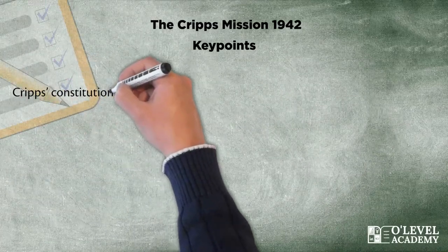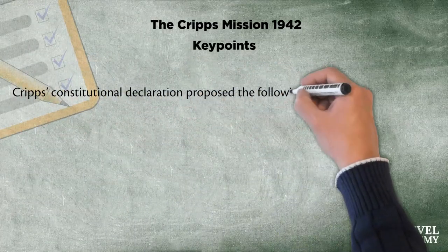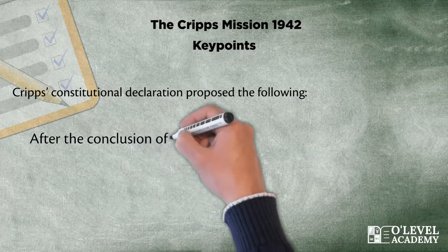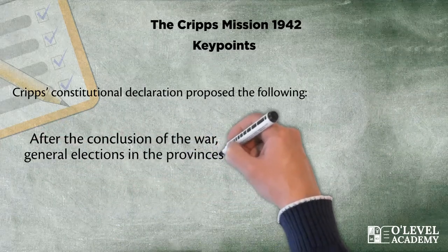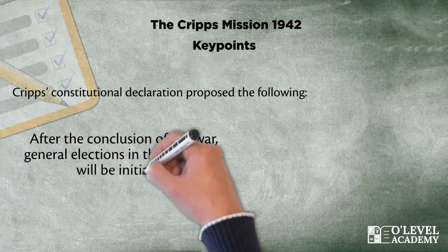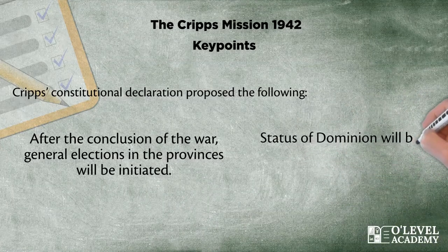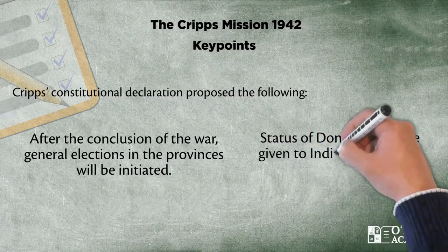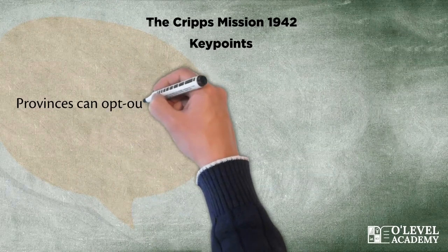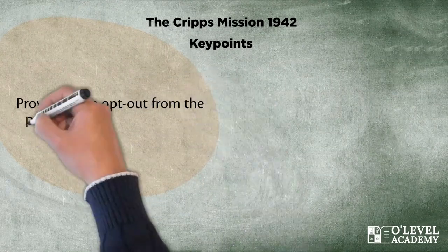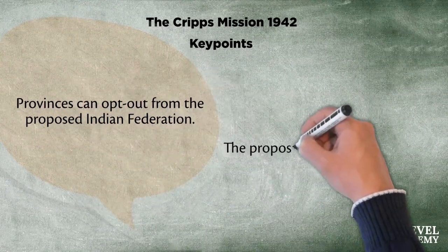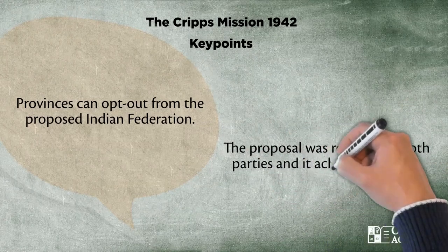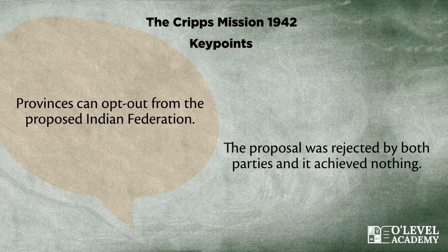Cripps' constitutional declaration proposed the following: after the conclusion of the war, general elections in the provinces will be initiated; the status of dominion will be given to India after the war; and provinces can opt out from the proposed Indian Federation. The proposal was rejected by both parties and it achieved nothing.